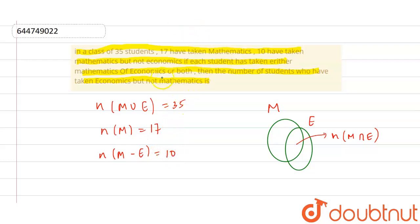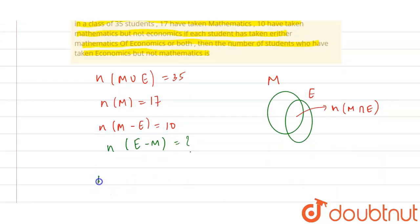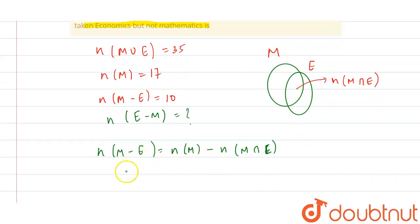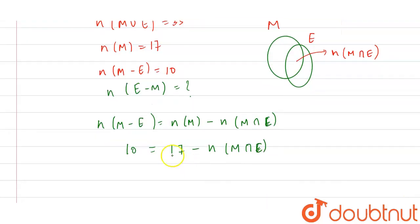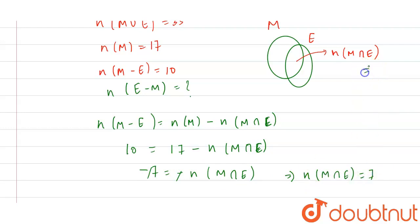We have to find n(E − M), the students who have taken economics but not mathematics. We know the formula: n(M − E) = n(M) − n(M ∩ E). Putting in values: 10 = 17 − n(M ∩ E), so n(M ∩ E) = 17 − 10 = 7. So the value of n(M ∩ E) equals 7.